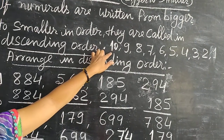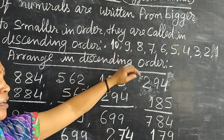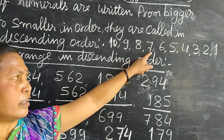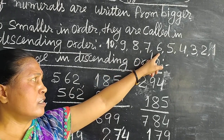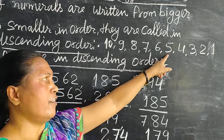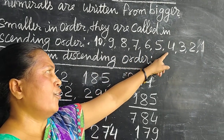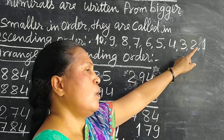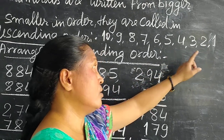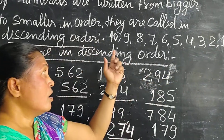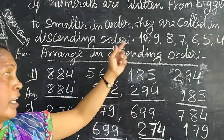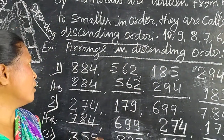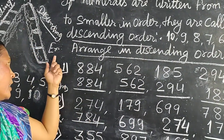In descending order we count the numbers: 10, 9, 8, 7, 6, 5, 4, 3, 2, 1. So this is descending order.